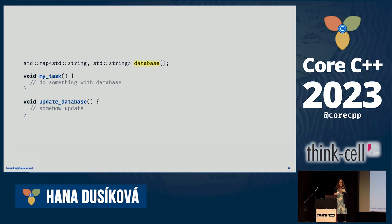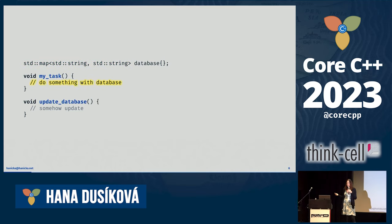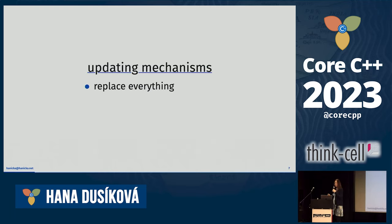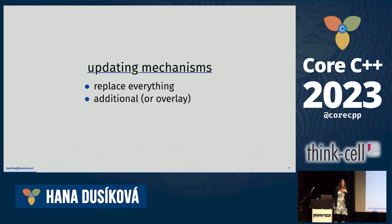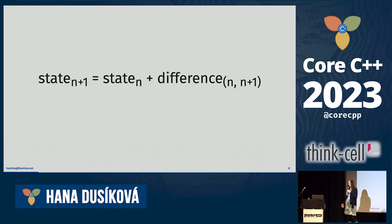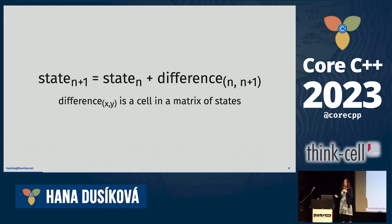Generally you have a database which is just a map of string to string. You have some task in your application using the database and some algorithm to update it. Updating mechanisms can be: replace everything every time, have an overlay over your existing data so you're always adding something, or have differential updates — think bsdiff. Generally, state n+1 is just state n plus the difference of two previous states.